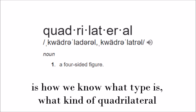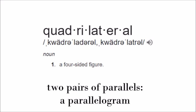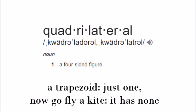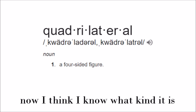What kind of quadrilateral? Two pairs of parallels? A parallelogram. A trapezoid? Just one. A kite has none. Now I think I know what kind it is.